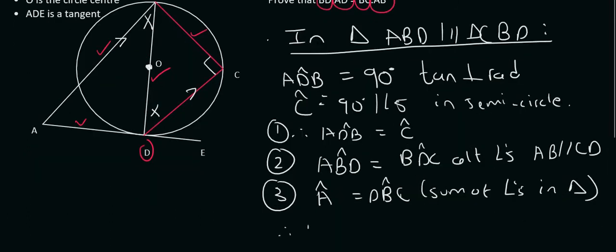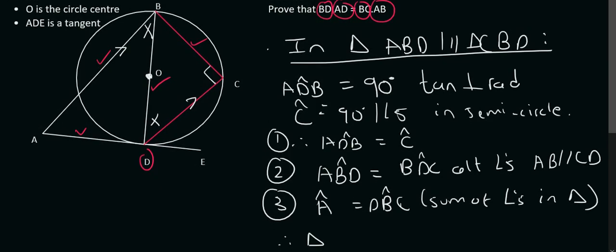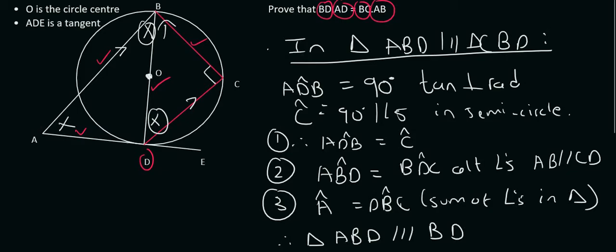So we can say, therefore, triangle. Now I'm just going to name the first one in any order, A, B, D. But now the order matters for the next one. So A, well, that went with B. Then angle B in this one, well, that went with angle D in that one. And then angle D in this triangle went with angle C in that triangle. And so the reason for this is angle, angle, angle.